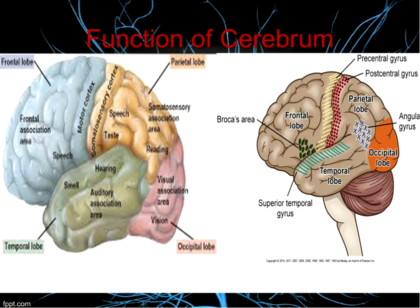Broca's area handles expressing speech, and Wernicke's area handles understanding speech. They share two important things in common: first, they're both on the left side of the brain — so a left-sided brain injury increases risk of impacting these areas. Second, they also share the same blood supply. This is why so often both aspects of speech are impacted when there's an insult to the left brain area.